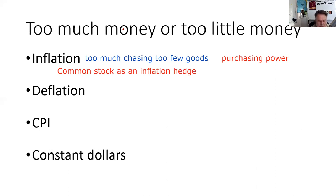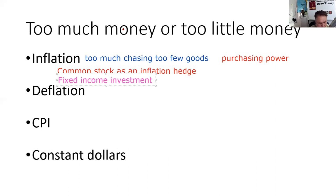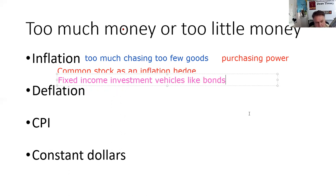Something that doesn't do well in an inflationary environment — and this is testable in terms of suitability — are fixed income investment vehicles. Those don't tend to hold up well in inflation. Fixed income investment vehicles include bonds, and particularly longer-term bonds would do even worse.